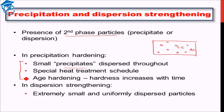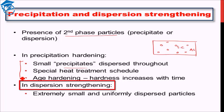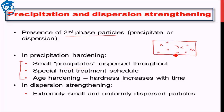The second mechanism discussed here is dispersion strengthening. In dispersion strengthening, we have extremely small, uniformly dispersed particles throughout the matrix — similar to precipitation hardening, but with extremely small particles. The mechanism of formation of precipitates or dispersions may be different, but the idea is the same: a second phase exists within a first phase.